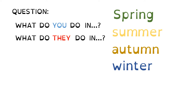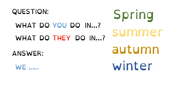The question is: what do you do in spring? Or what do they do in summer? Let's see the answer. You say 'we' and then the activity, or 'they' and then the activity. For example, what do you do in spring?